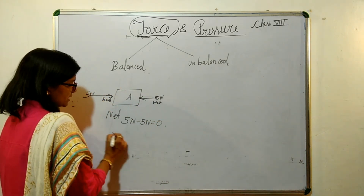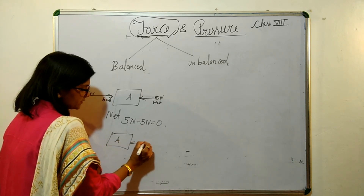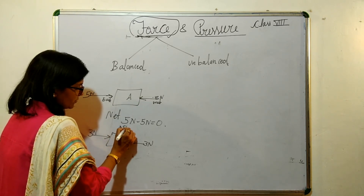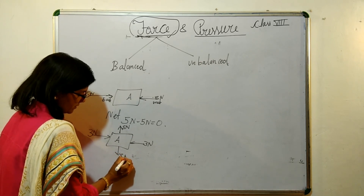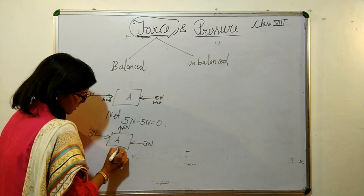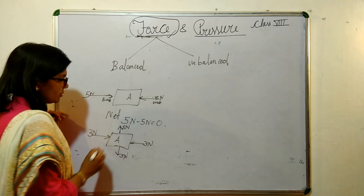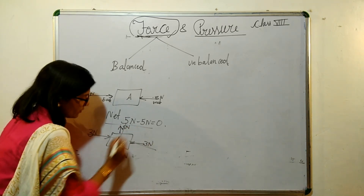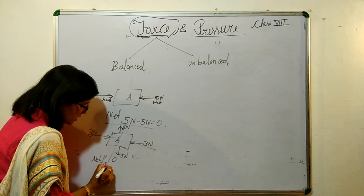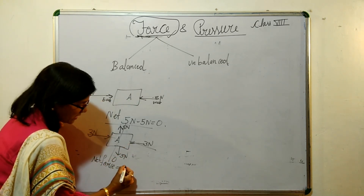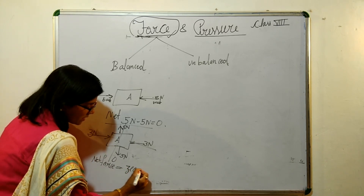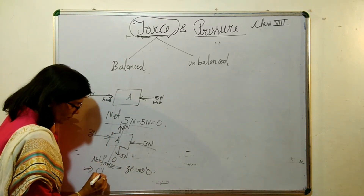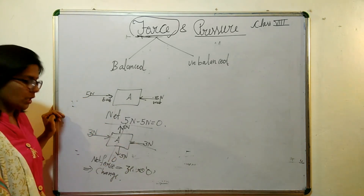There can be more forces. Suppose object A has 3 newton, 3 newton, and 5 newton applied in various directions — the vertical forces nullify each other and the others nullify as well. So the net force in the case of balanced force is zero. Because there is no net force, there will be no change in the state of the object.